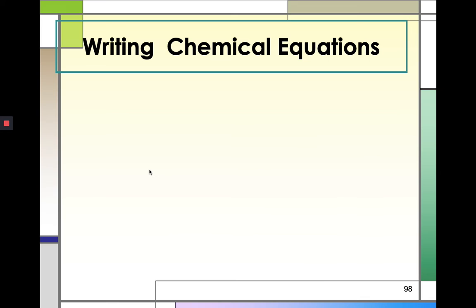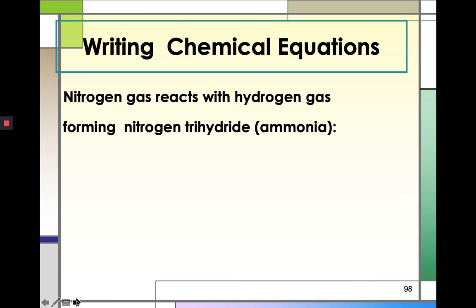So here are a few more examples of writing chemical equations. For example, you have nitrogen gas reacts with hydrogen gas forming nitrogen trihydride or ammonia. So nitrogen gas is represented by N2 and H2 for hydrogen gas, and then you must know that the chemical formula for ammonia is NH3.